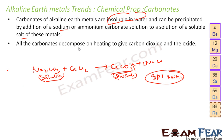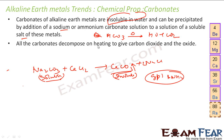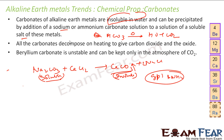All carbonates decompose on heating to give carbon dioxide and metal oxides. So if you take any metal carbonate and heat it, you get the metal oxide and carbon dioxide. All carbonates when heated give metal oxides and CO₂.